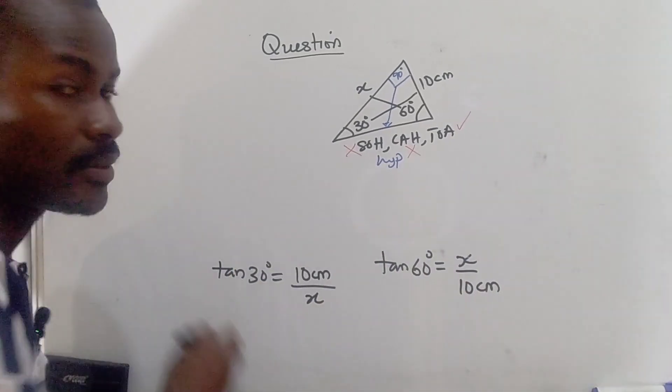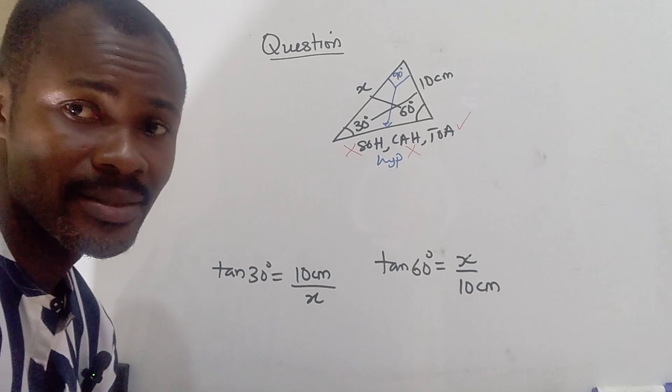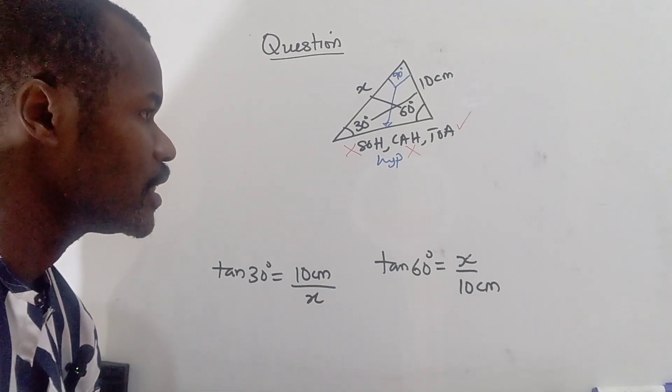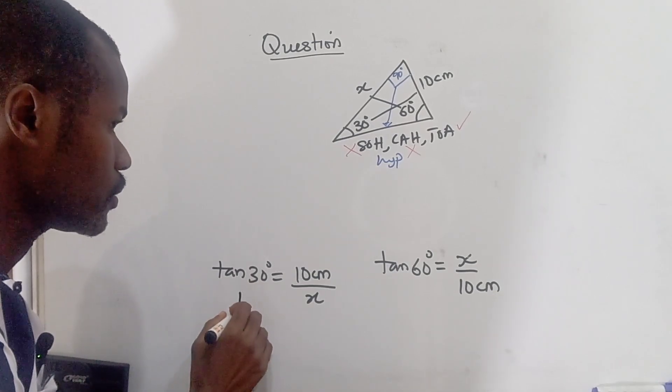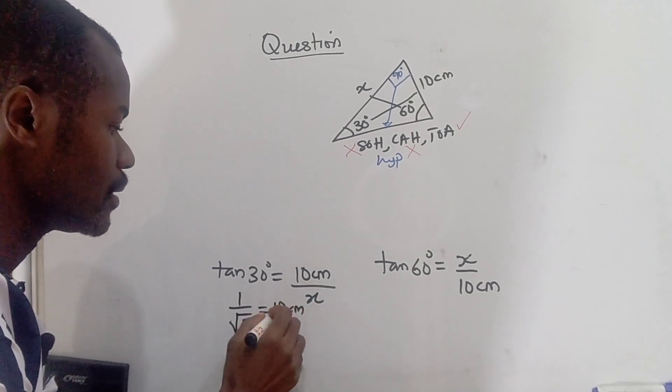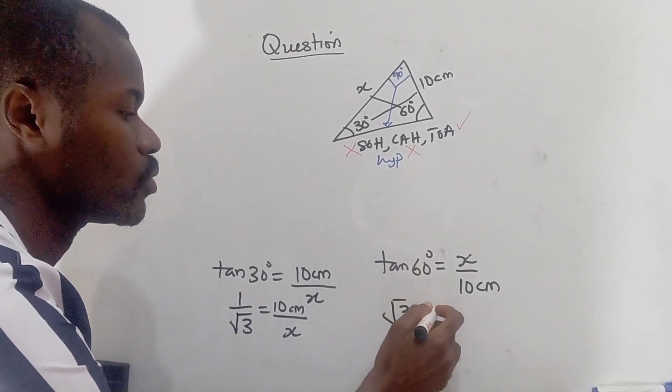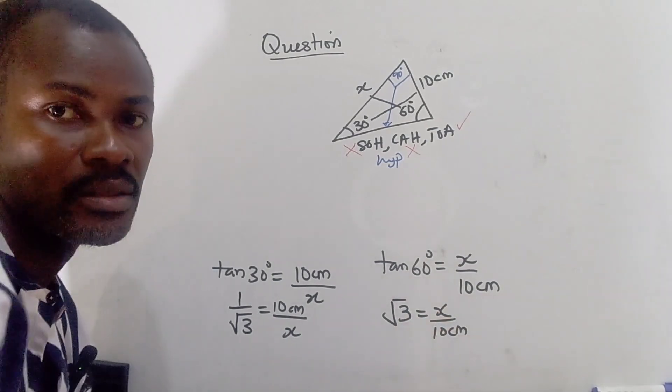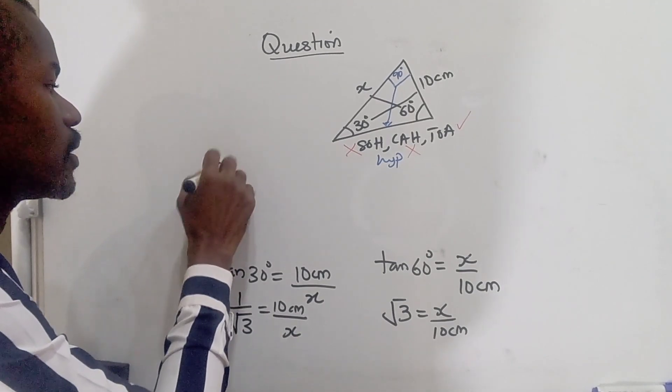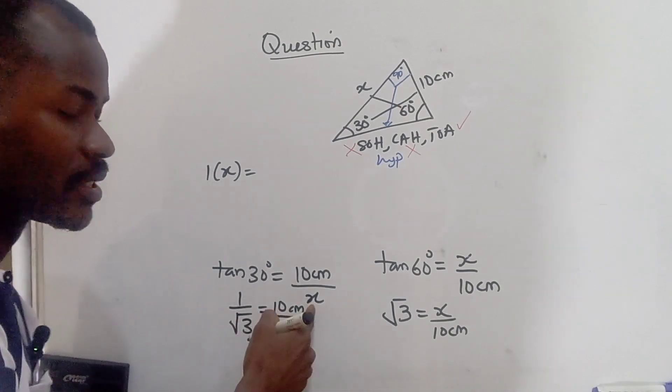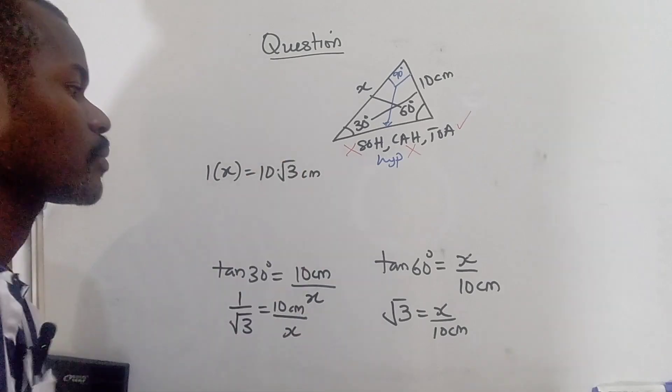So from that, let's see what we can do further. By trigonometric identities or special angles, we know that our tan 30 degree is 1 over root 3. So it's equal to 10 centimeter over x. For tan 60, we know that it is root 3, which is x over 10 centimeter. So here we can cross multiply. So x times 1, so 1 times x is root 3 times 10 centimeter. So we have 10 root 3 centimeter.